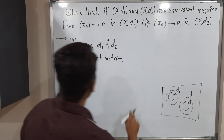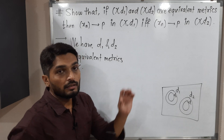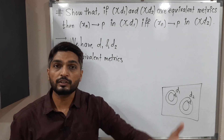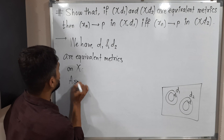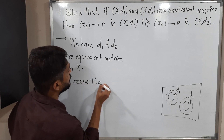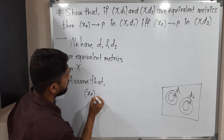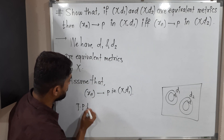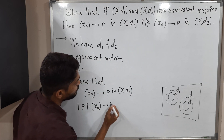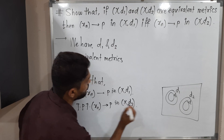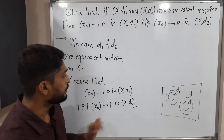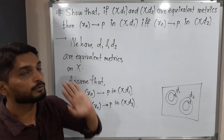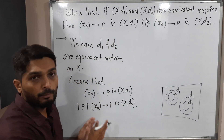So this is the given information and we have to prove these two statements are equivalent. Since it is an if and only if, that means we will assume one part, prove the second part, and after that prove the converse part also. So let us assume the first thing: assume that xn converges to P in (X, D1), and what we have to prove is that the sequence converges to the same point in metric space (X, D2).